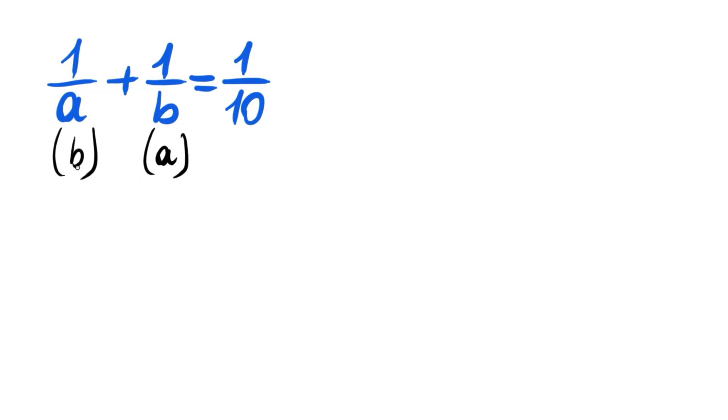So we will have b plus a all divided by b times a, or a times b, and this is equal to 1 over 10. Cross multiplying, we will have a times b is equal to 10 times b plus a.